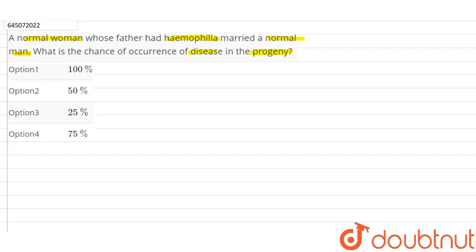So haemophilia is a genetic disorder which means that it can be passed on from one generation to the next, from the parents to their progeny.